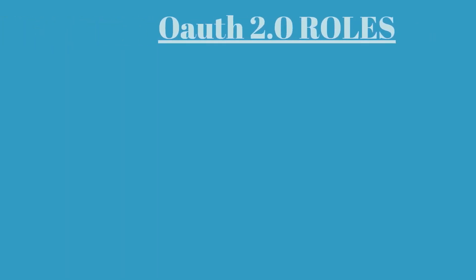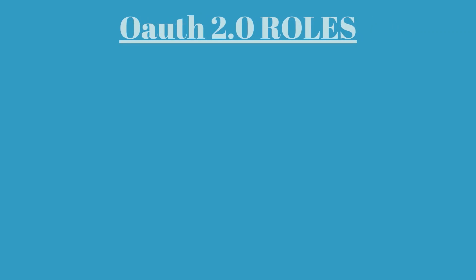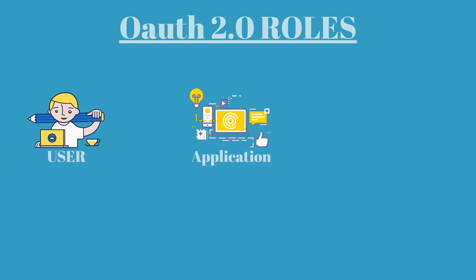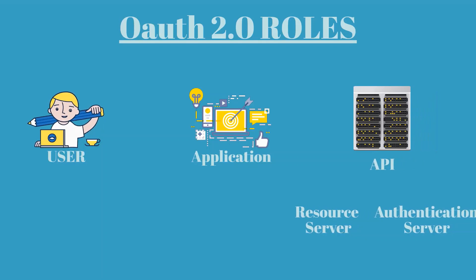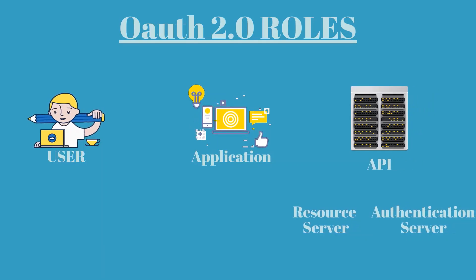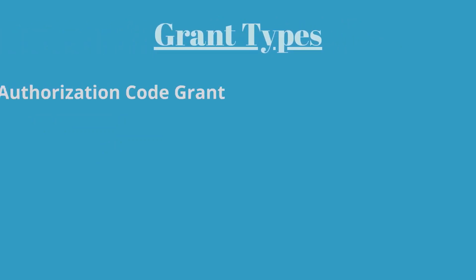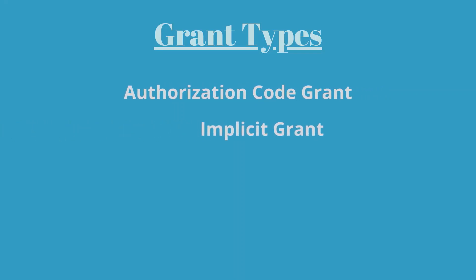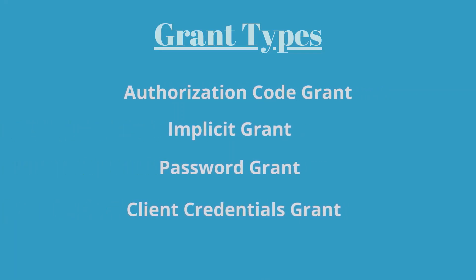Now let's take a look at the roles that exist within an OAuth 2.0 framework. For simplicity, we will use three roles to start: the user, the application, and the API. Within the API there is an authentication server and a resource server. In OAuth 2.0 there are four different grant types for different use cases: Authorization Code Grant, Implicit Grant, Password Grant, and Client Credentials Grant.